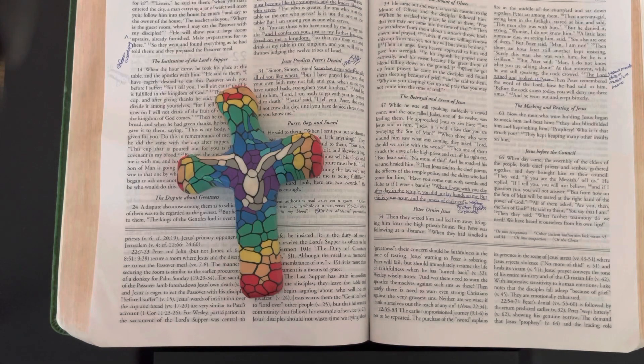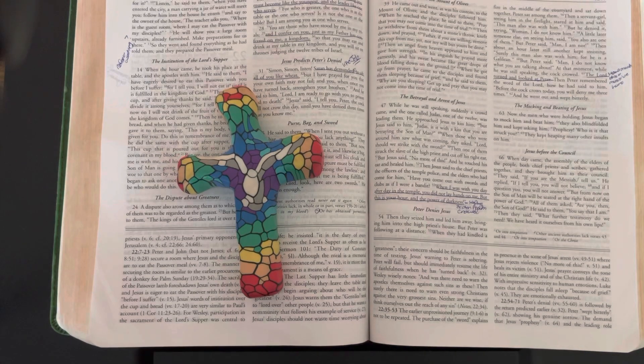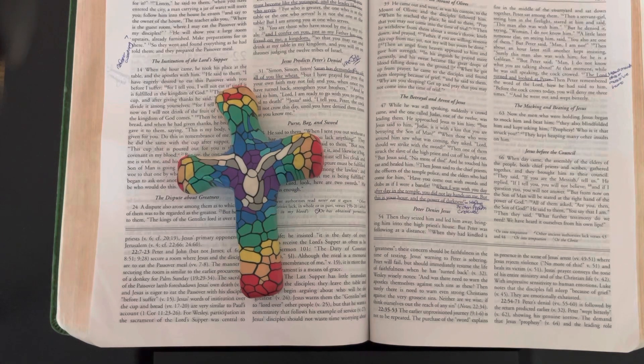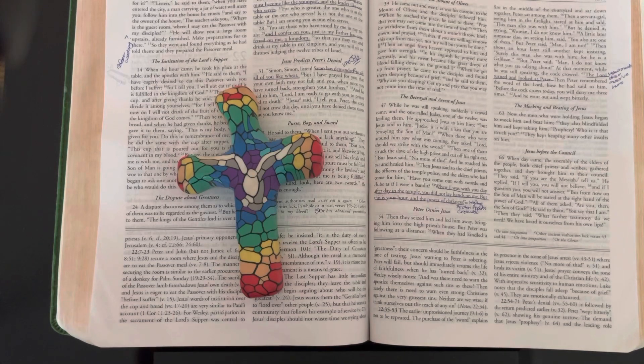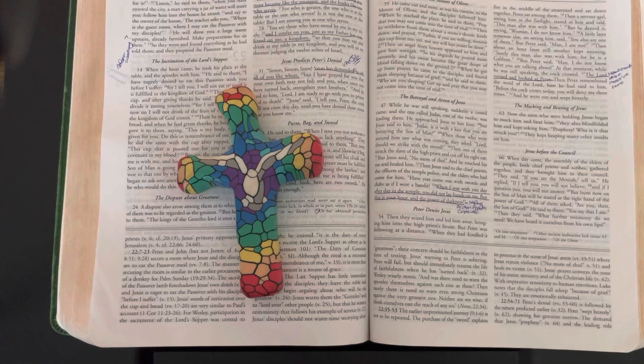While he was still speaking, suddenly a crowd came and the one called Judas, one of the twelve, was leading them. He approached Jesus to kiss him, but Jesus said to him, "Judas, is it with a kiss that you are betraying the Son of Man?" When those who were around him saw what was coming, they asked, "Lord, should we strike with the sword?"